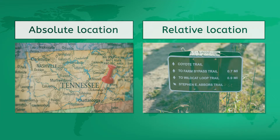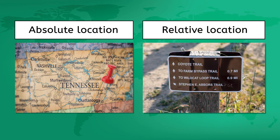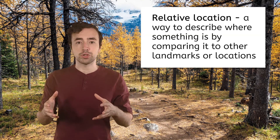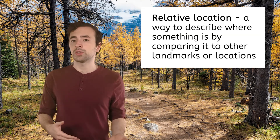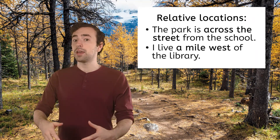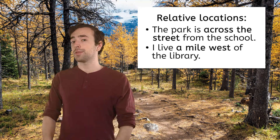Geographers describe locations in two different ways: as absolute locations and relative locations. What do you think the difference might be between the two? Relative locations describe where something is compared to other landmarks or locations. It's like saying the park is across the street from the school, or I live a mile west of the library.